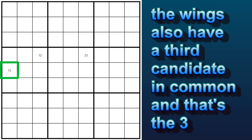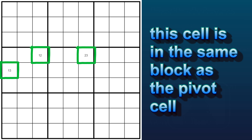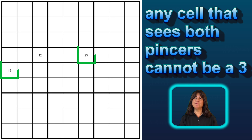In this case, you can see this cell has a one, and this cell has a two, and both these cells have a three in common as well. These cells are referred to as pincers, and both these cells must see the pivot cell — and of course they do. This cell is in the same block as the pivot cell, and this cell is in the same row. So now, any cell that sees both pincers cannot be a three, and therefore can be eliminated.